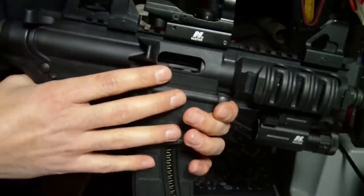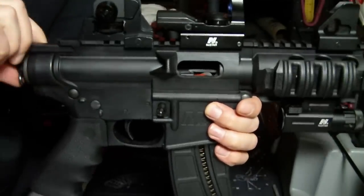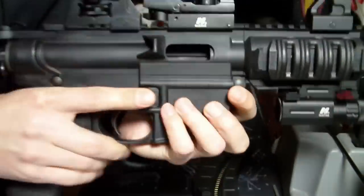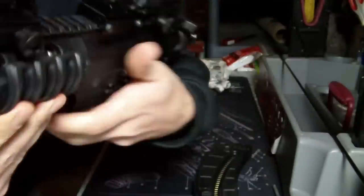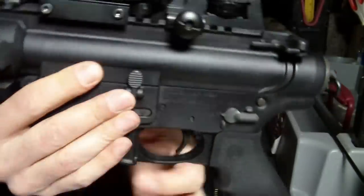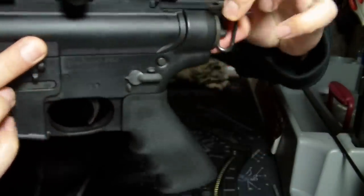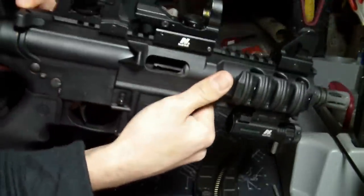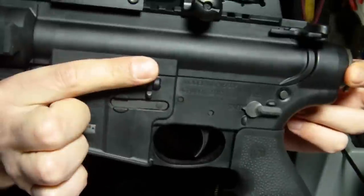Nothing really else on this side. Obviously, you have the ejection port, which does lock open after the last round shot. Otherwise, on this side, it does have the bolt lock button as well as the release button.